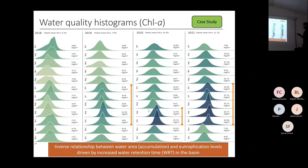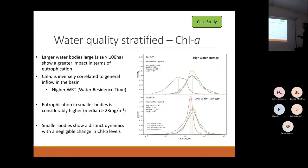Moving on, we continue with a stratified analysis to see how smaller water bodies compare to the biggest ones. To do this, we divided them by size: between 1 and 5 hectares, between 5 and 10 hectares.